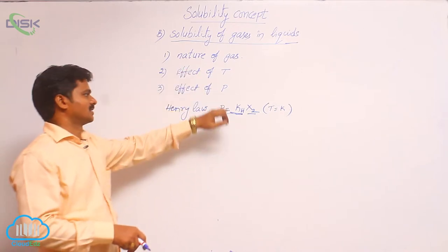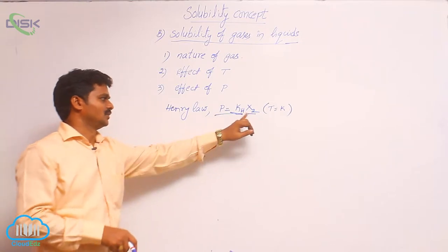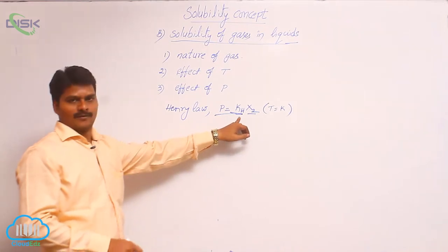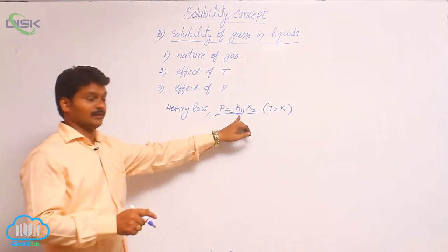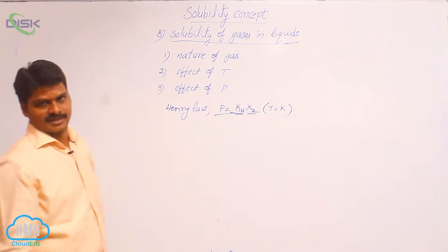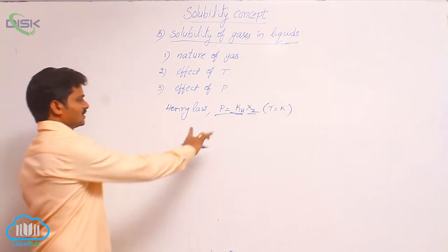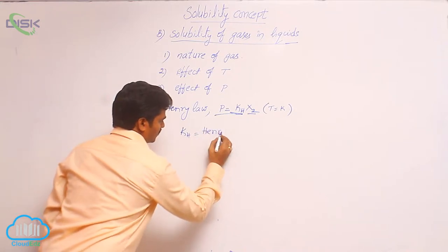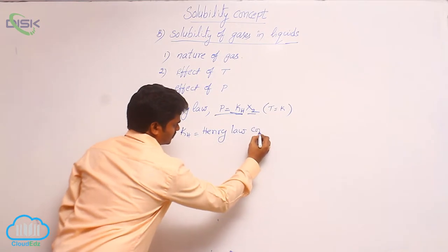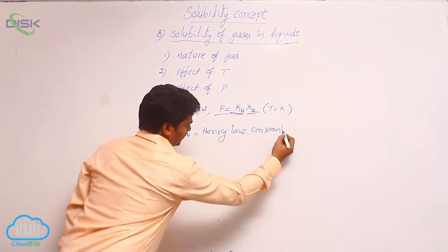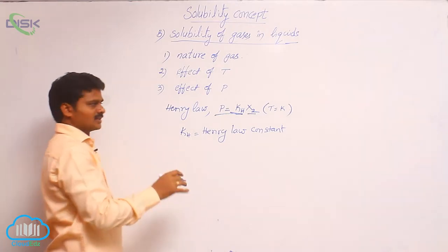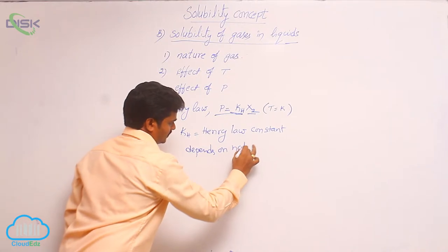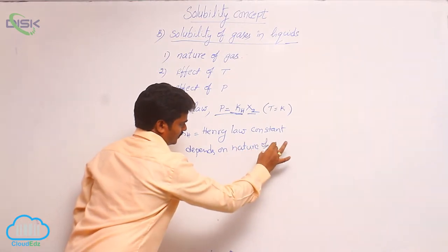For the effect of pressure, see how it is related to the mole fraction of solute: equilibrium pressure is equal to the product of Henry's law constant Kh and mole fraction of the gas dissolved. Kh is Henry's law constant, and it depends on the nature of the gas.